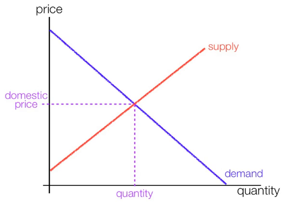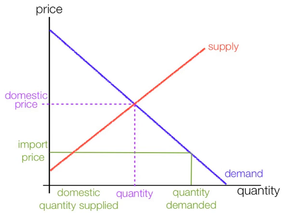Now if our country begins to import and it receives an import price there below domestic price, quantity demanded is there and domestic quantity supplied is there. Imports are measured there, which is quantity demanded minus domestic quantity supplied.